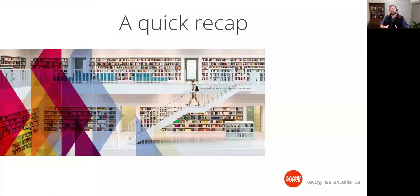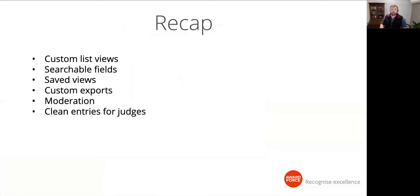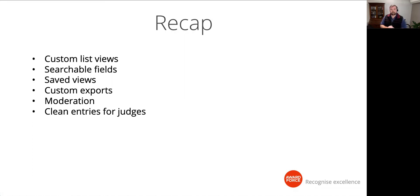Let's recap on what we've looked at regarding time-saving ideas for effective program management. We covered: customizing list views to suit your working needs; making custom fields searchable to quickly find entries and users based on known responses; using customized list views and searchable fields to quickly apply bulk actions such as tagging; saving a search filter for reuse; creating a customized export so you don't have to clean up spreadsheets; and options for saving judges' time by moderating entries and configuring what judges see when judging.